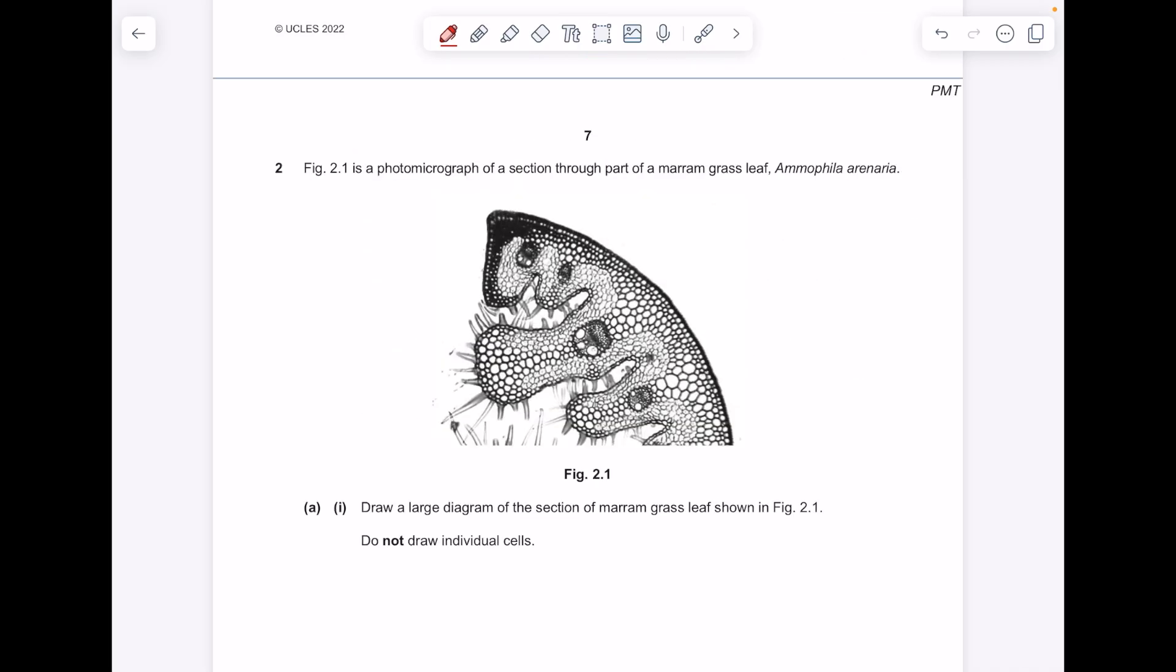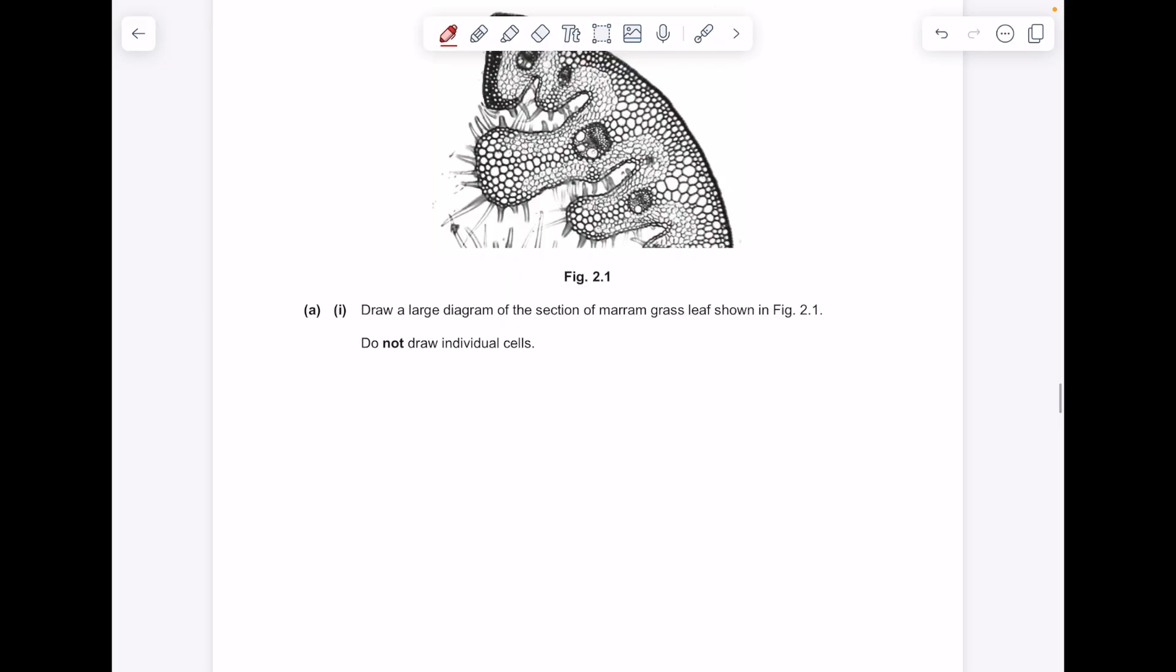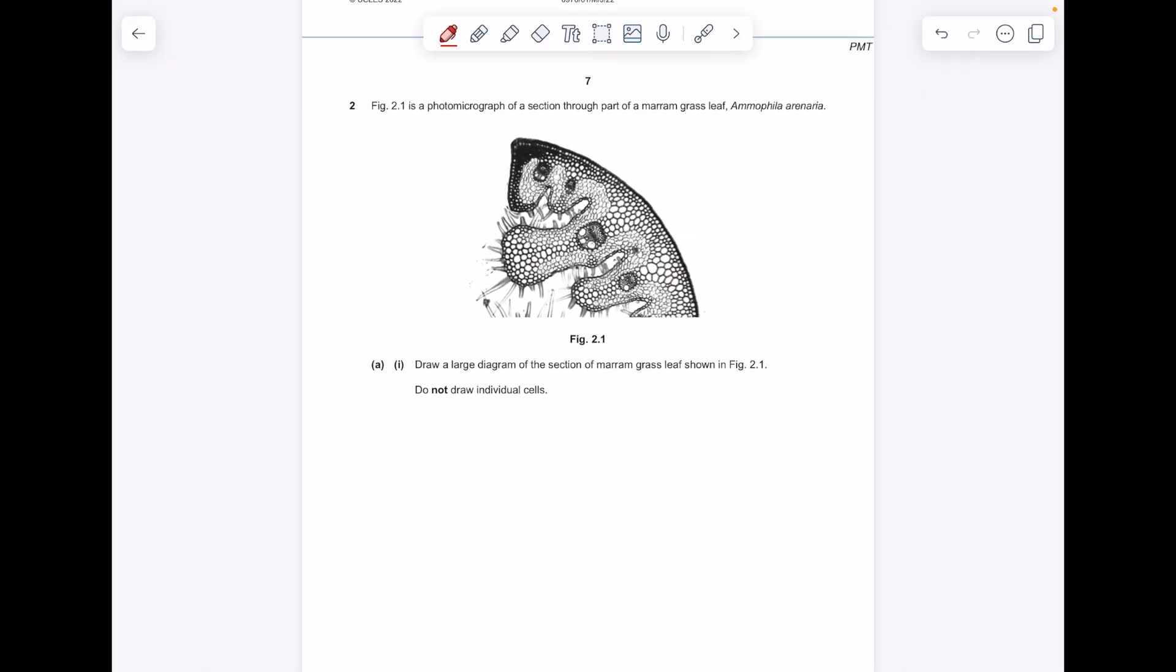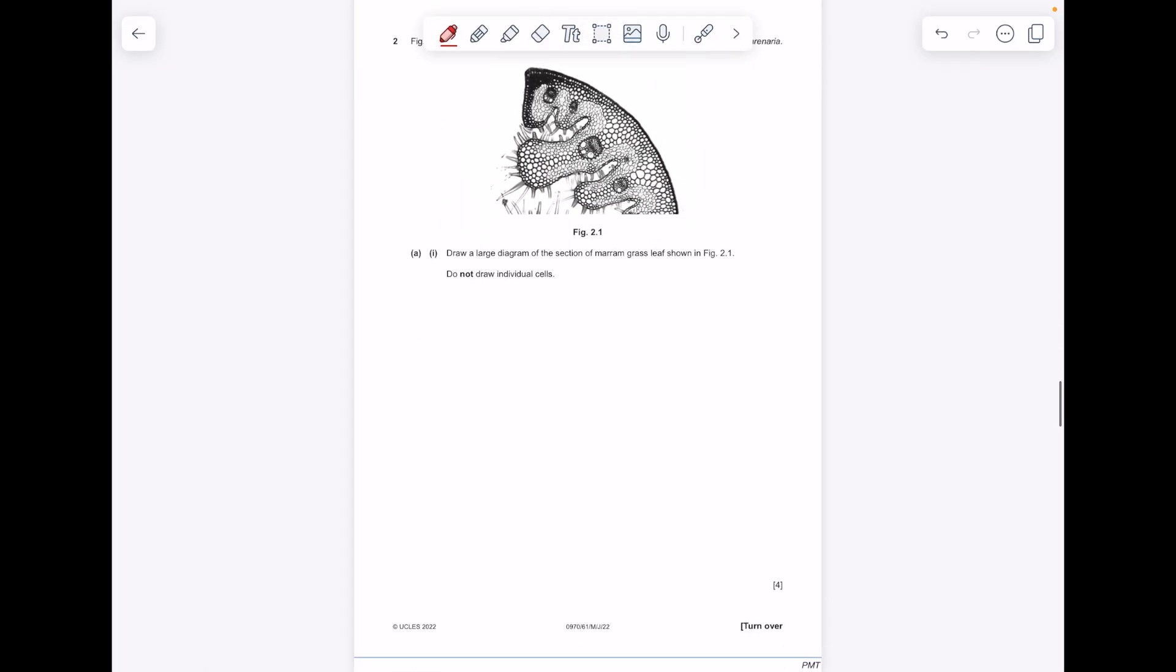Figure 2.1 is a photomicrograph of a section through part of a marum grass leaf. Draw a large-scale diagram of the section of marum grass leaf shown. Do not draw individual cells. So draw it nice and big. Try and follow the shape. As we know, drawing is not my forte. Make sure to include some of those vascular bundles.